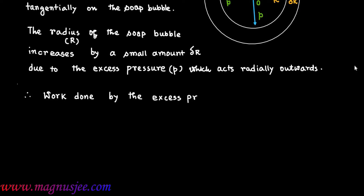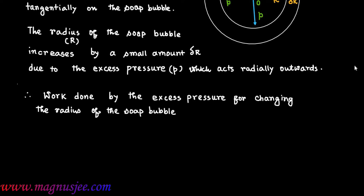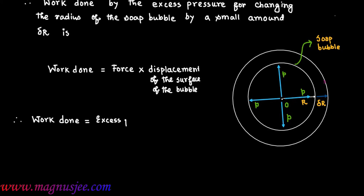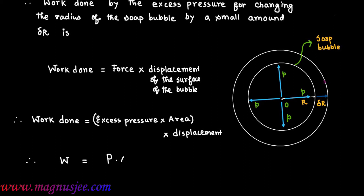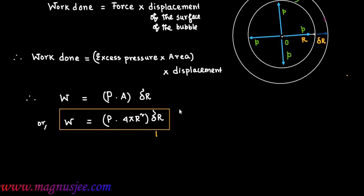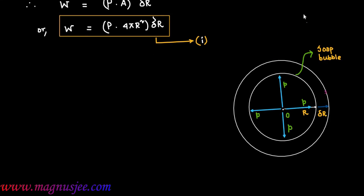Therefore, the work done by the excess pressure for changing the radius of the soap bubble by a small amount delta r is a product of force and displacement. Work done W = p × A × delta r = p × 4πr² × delta r. This is equation 1: W = p·4πr²·delta r.